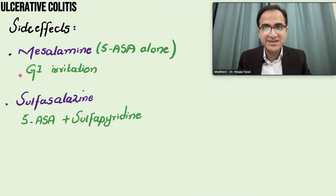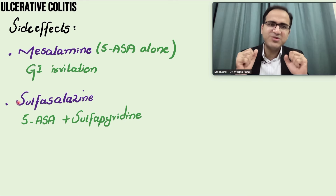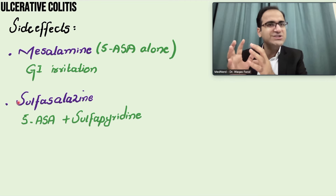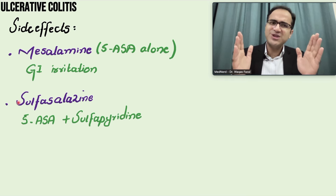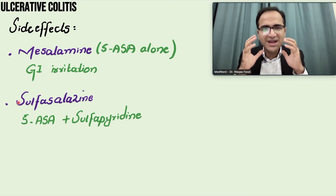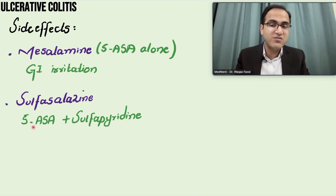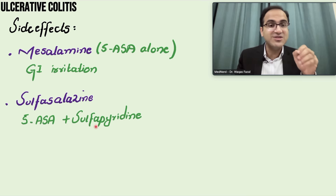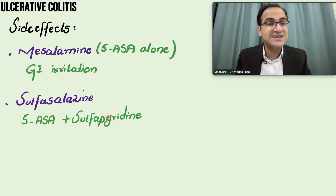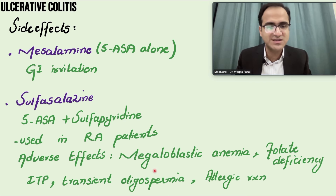Remember the side effects of mesalamine: it causes GI irritation. Sulfasalazine is a combination of 5-aminosalicylic acid and sulfapyridine. If a patient has concomitant rheumatoid arthritis with ulcerative colitis — the most common extra-intestinal manifestation being skeletal problems — use sulfasalazine. The 5-ASA component acts in the gut to reduce inflammation; sulfapyridine is absorbed into the blood and treats rheumatoid arthritis. Adverse effects include megaloblastic anemia, folate deficiency, ITP, transient oligospermia, and allergic reactions.